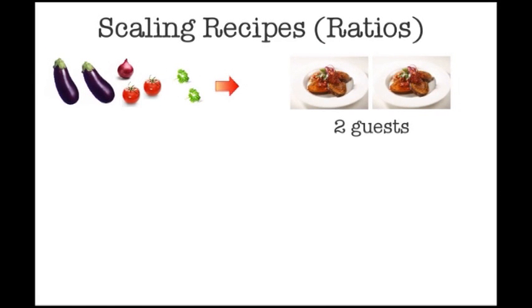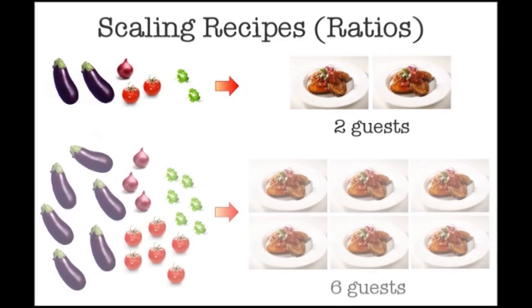If we're cooking eggplant parmigiana for two, we'll need two eggplants, two tomatoes, an onion and parsley. If we expect six guests, then we scale everything up by a factor of three. We say there is a fixed proportion of ingredients to make the dish.